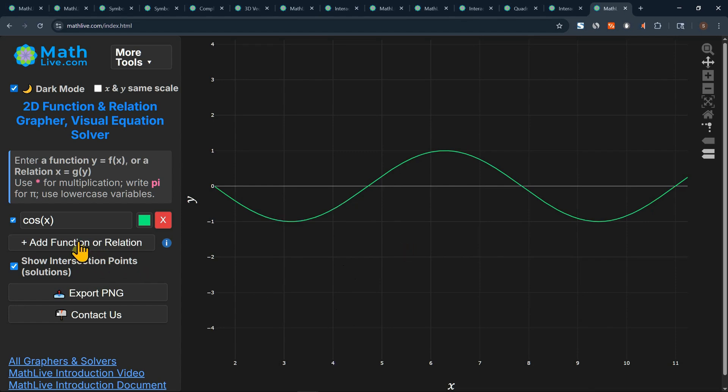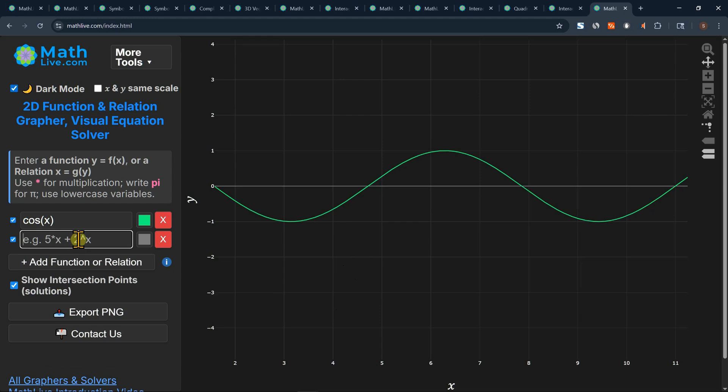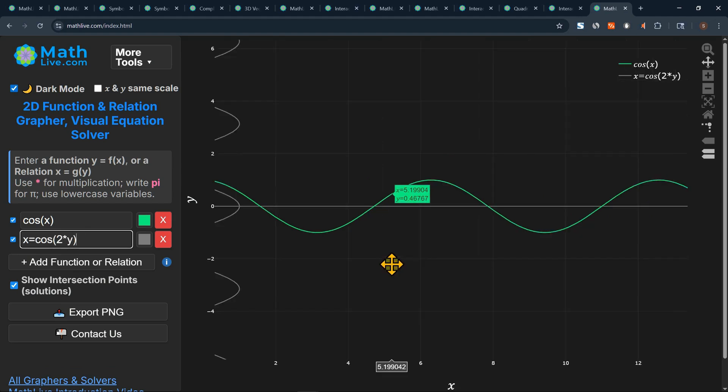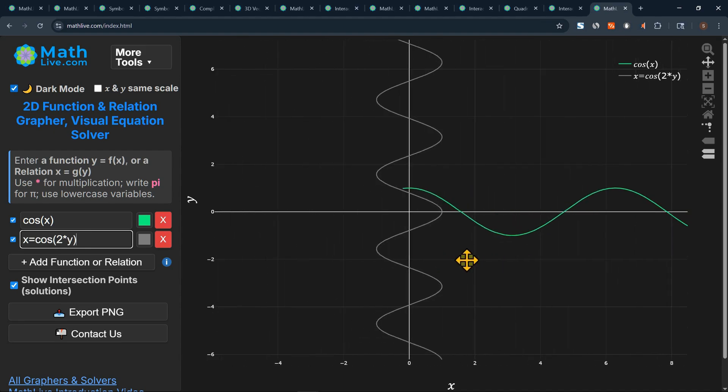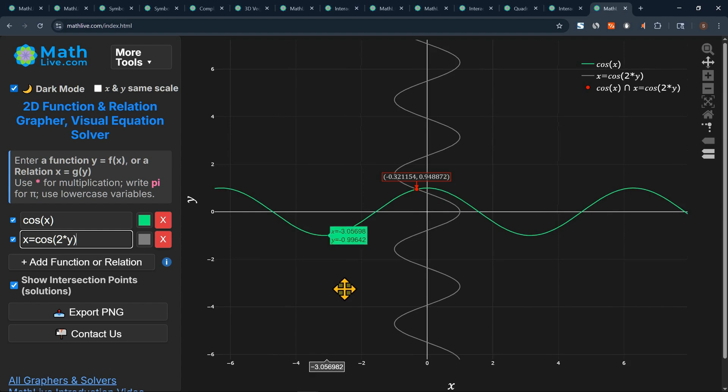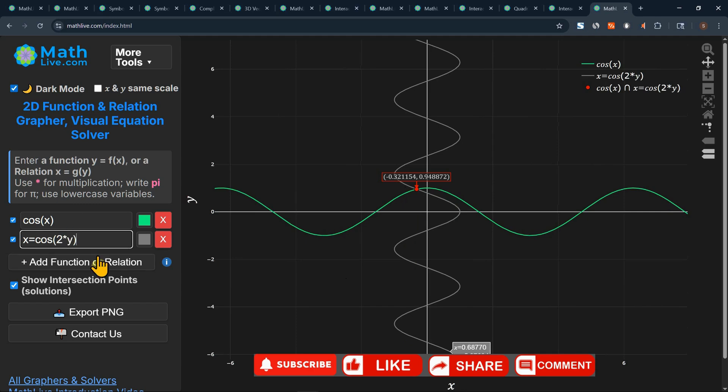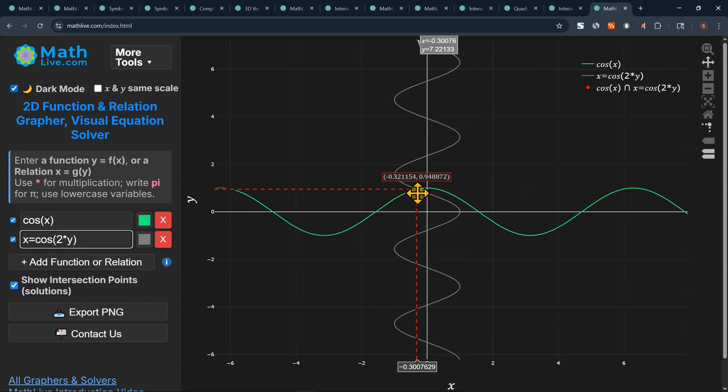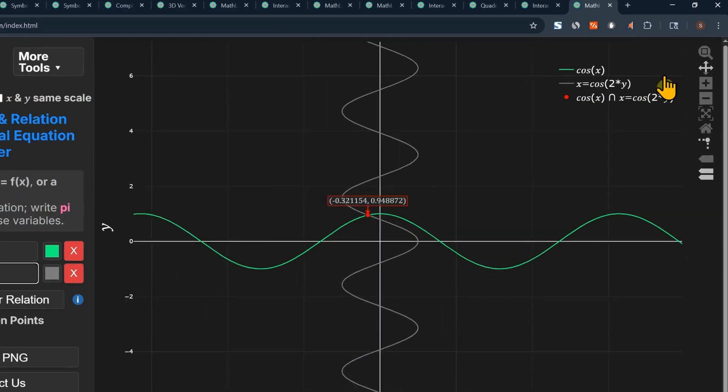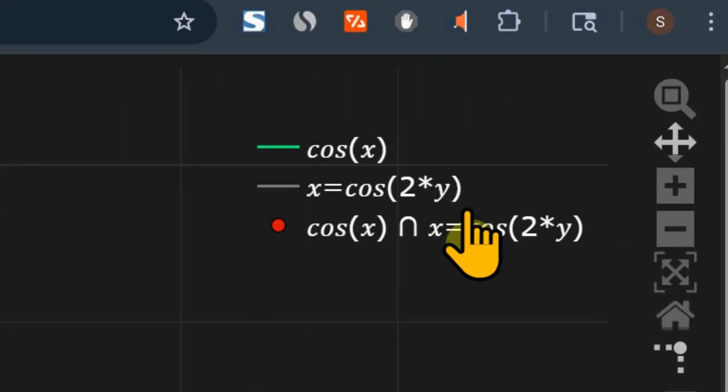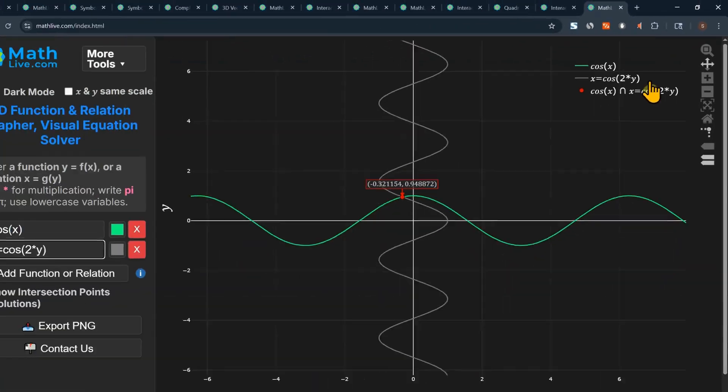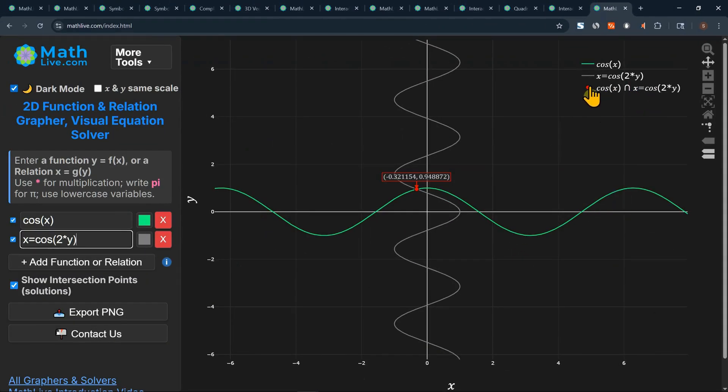Or if you add another function, let me add another function really quickly. Or let's put a relation. x equal. We see that the intersection between those two, this function and this relation is at this point. Also here in the top caption, you see the cosine and then you see the relation, and then the intersection is the red dot.